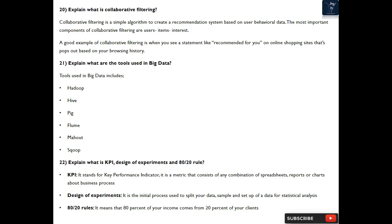Question 22: Explain what is KPI, design of experiments and 80/20 rule? KPI stands for Key Performance Indicator. It is a metric that consists of any combination of spreadsheets, reports or charts about business process. Design of experiments is the initial process used to split your data sample and setup of data for statistical analysis.